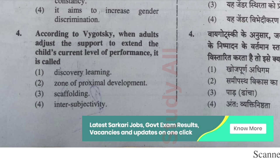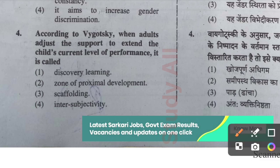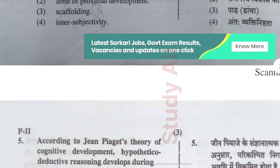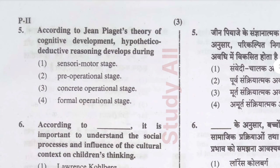Question number four: According to Vygotsky, when an adult adjusts the support to extend the child's current level of performance, it is called scaffolding.